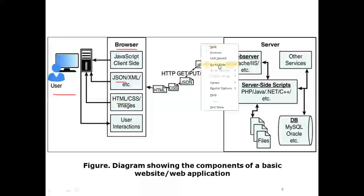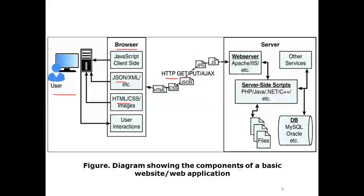You send a request to the server with the help of HTTP, GET, PUT, or AJAX — Asynchronous JavaScript and XML. The third component is the web server, which acts as a local server to interact, compute, or do manipulations. Examples of web servers are Apache Tomcat and IIS — Internet Information Server.